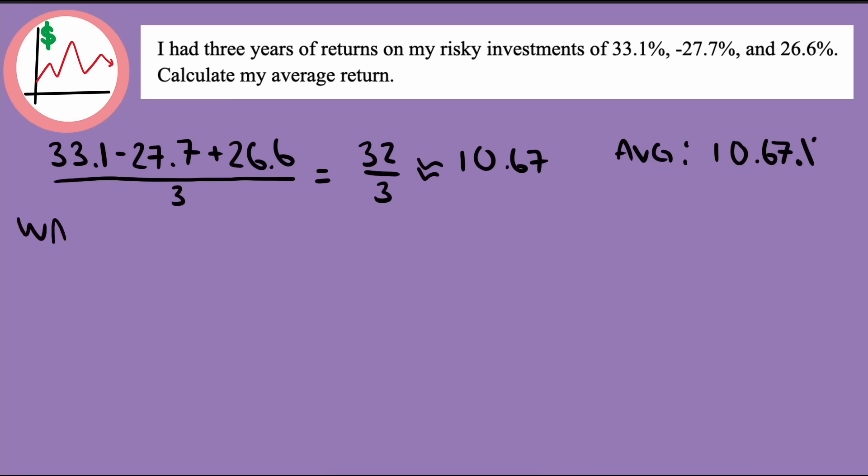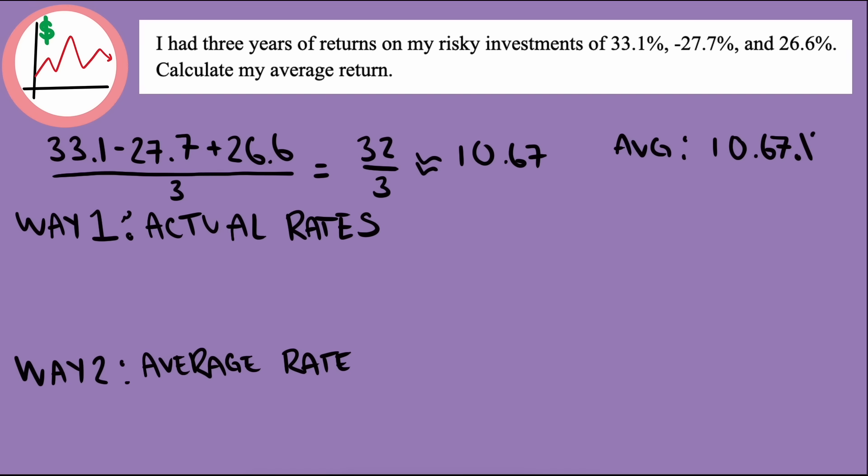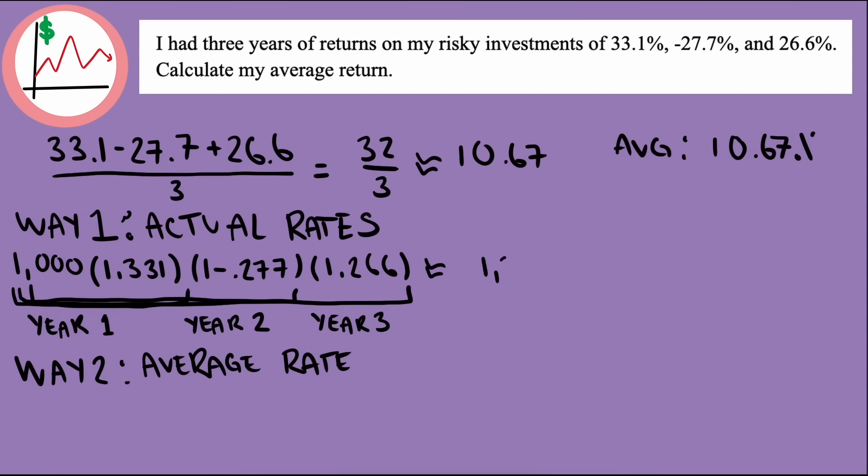I had them verify that the number they calculated was the actual average by calculating the value of my investments by the end of year 3 in two different ways, with the three different values and with their average value. Assuming simple interest in this problem where the interest is applied at the end of the year, we can calculate my total investment using this formula. So starting with $1,000, we get a total of about $1,218.